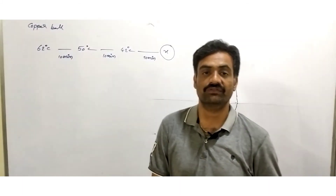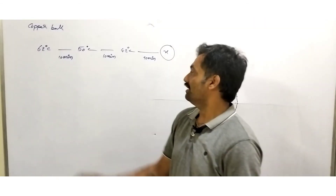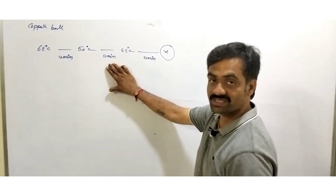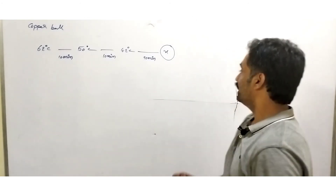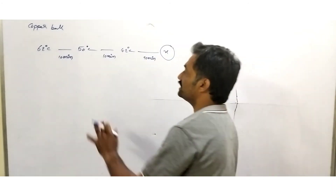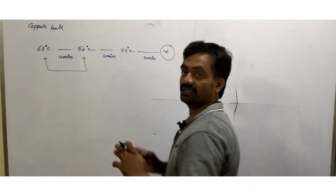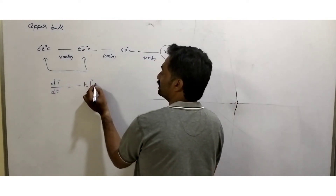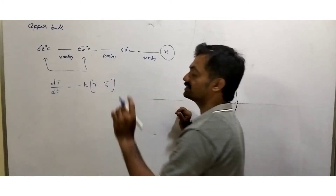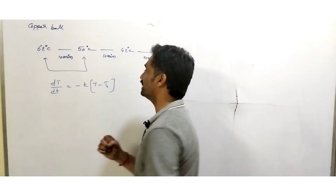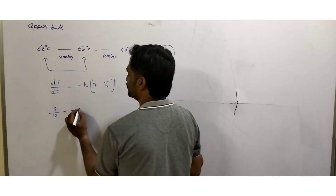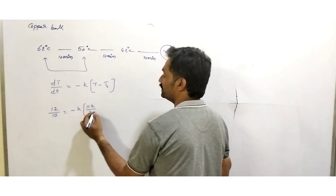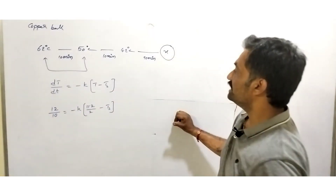Now we are going to solve a numerical based on Newton's Law of Cooling. The initial temperature of a copper ball is 62°C; it decreases to 50°C in 10 minutes, then from 50°C to 42°C in the next 10 minutes, and from 42°C to x°C in the next 10 minutes. For the first interval: (62 − 50)/10 = −K × [(62 + 50)/2 − T_s], giving 12/10 = −K × (56 − T_s).